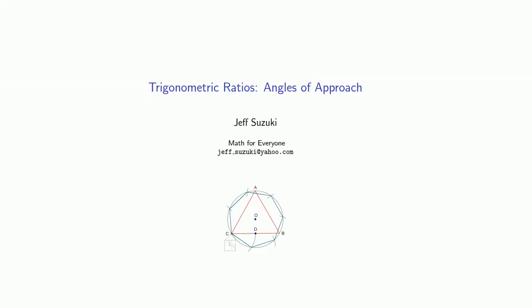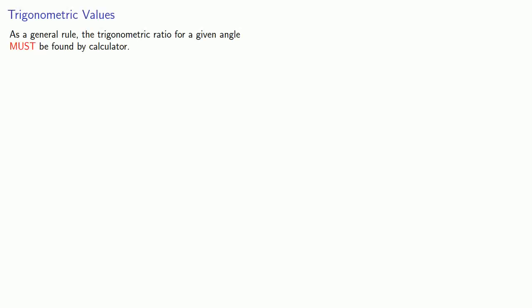Trigonometry is useful because it's often easier to measure angles and then compute distances from the trigonometric ratios. One problem is that as a general rule, the trigonometric ratio for a given angle must be found using a calculator or some other computing device.